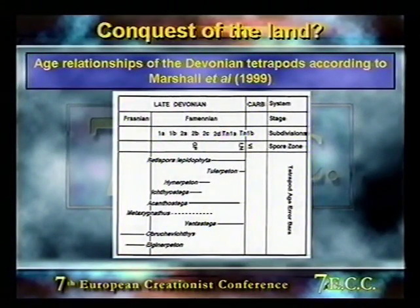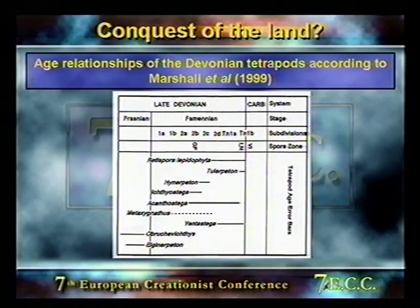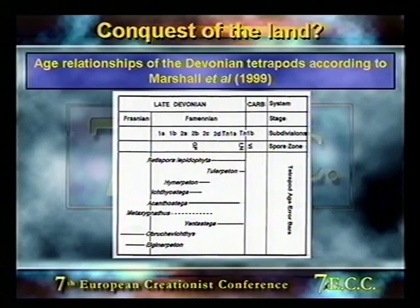This diagram was published by the workers who did the spore sample analysis. They argued on the basis of their spore samples that Ichthyostega and Acanthostega were somewhat older than previously considered — instead of being Upper Famennian, they were mid-Famennian. So this has led to some re-evaluation.